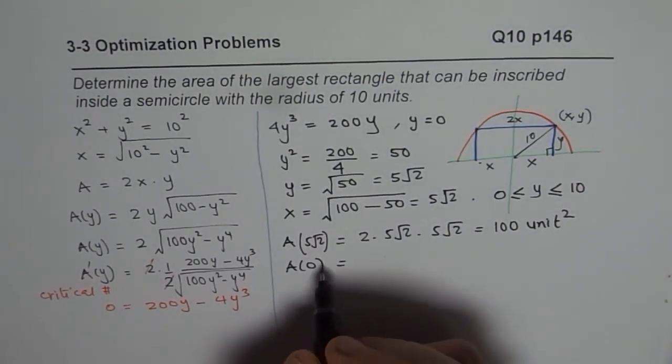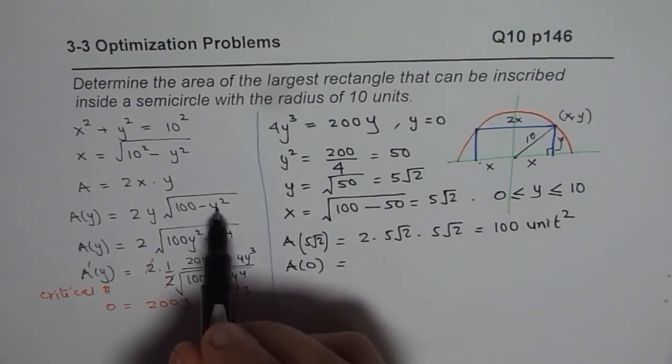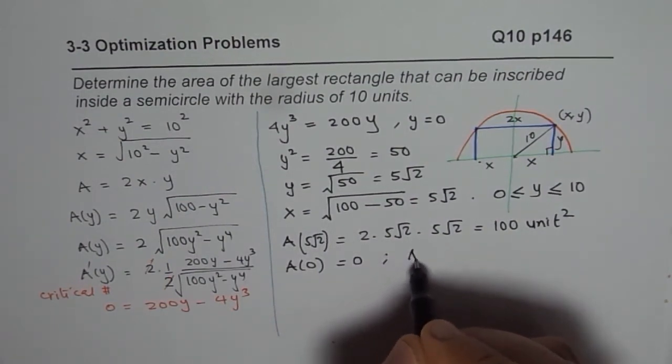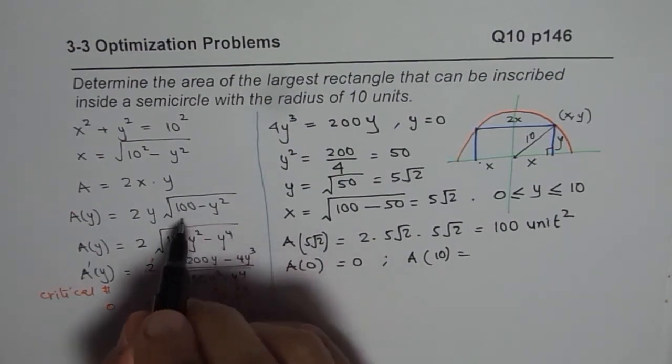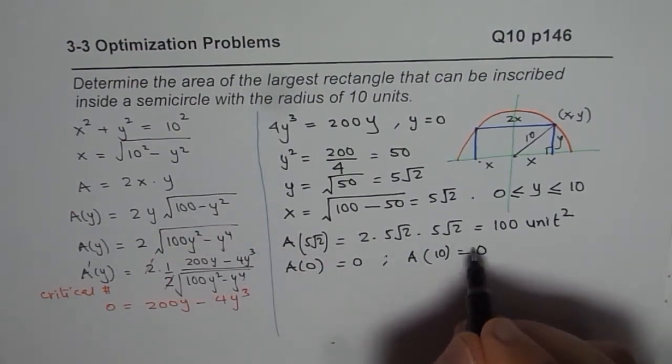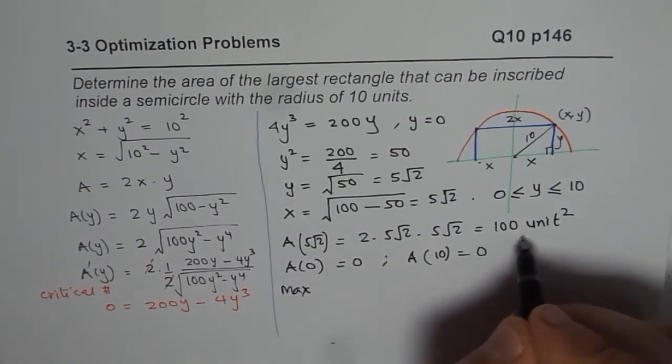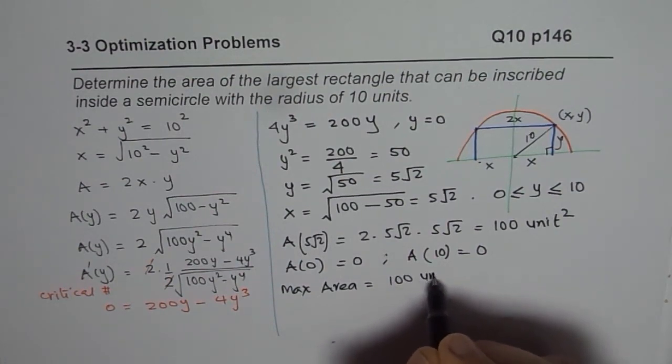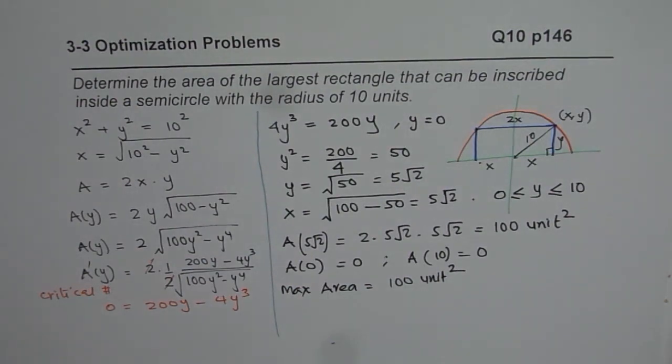So that is the area which is for 5 square root 2. Let's also check the boundary conditions. Area for 0 will be, if I substitute 0 for y in this particular case, 0 times anything will be 0. And if I write A as equals to 10, area at 10 will also be 0 since the other factor is going to be 0. So of course the maximum area for us is 100 unit square. So that is how we can actually find the maximum area in this particular case.